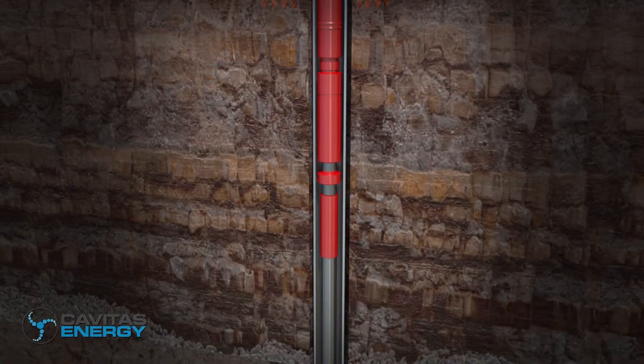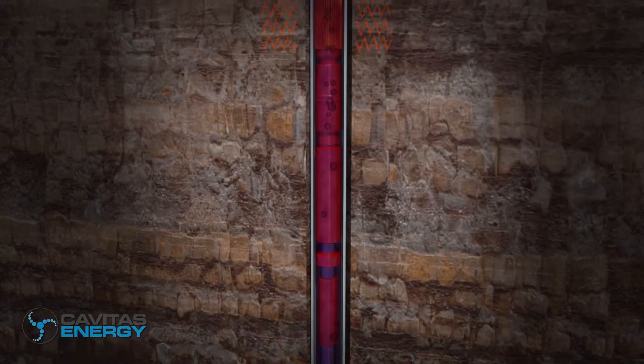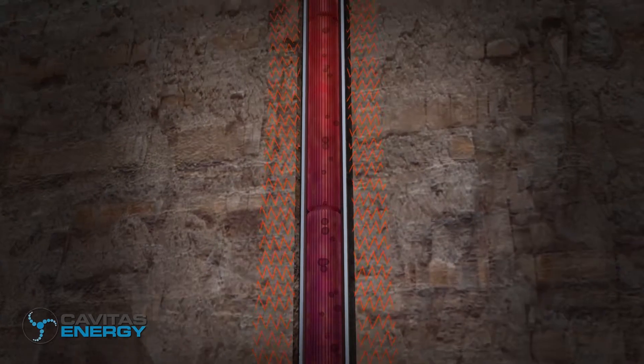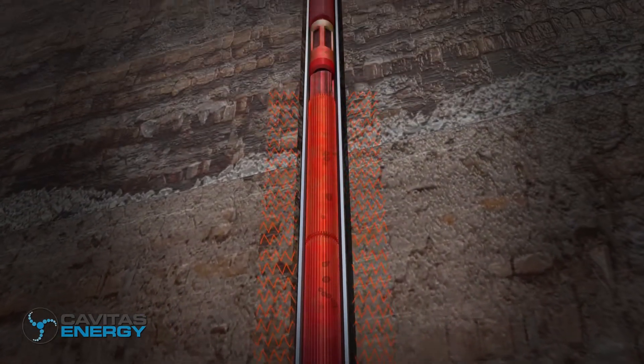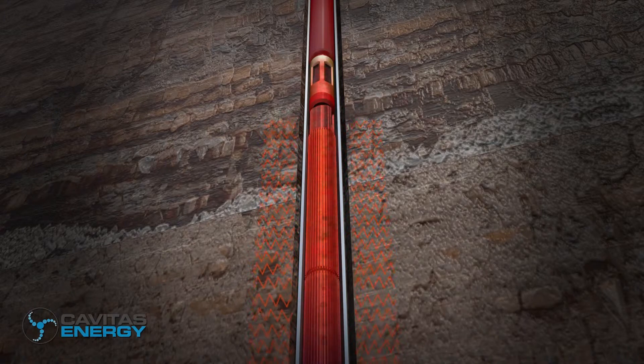Produced fluid flowing in the production well would bypass THOR and be heated before flowing through the artificial lift system. The heating of the produced fluid would lower its viscosity, allowing it to flow more freely.